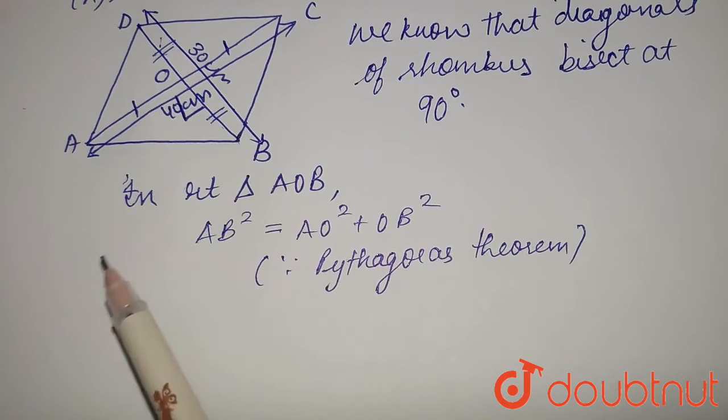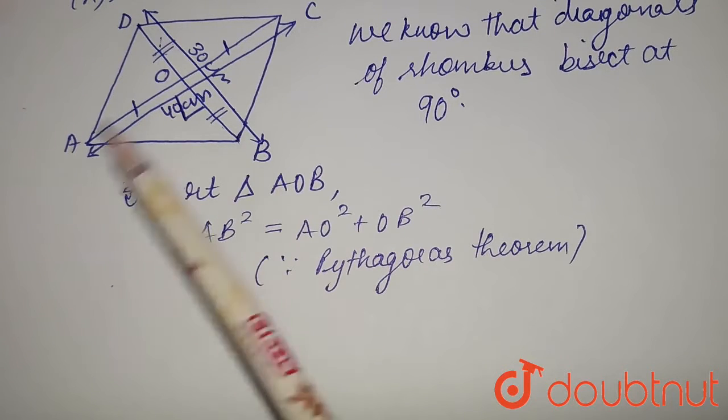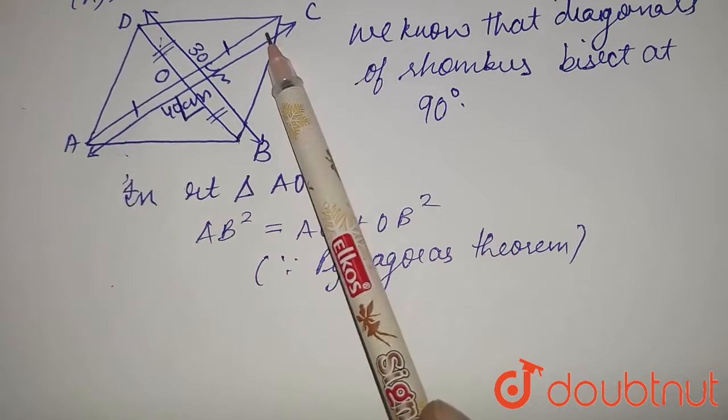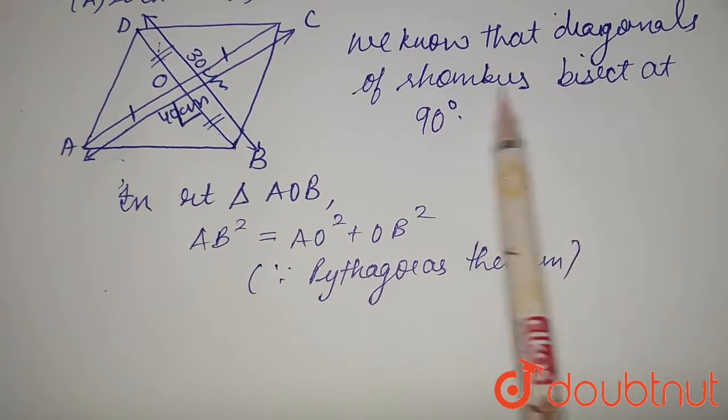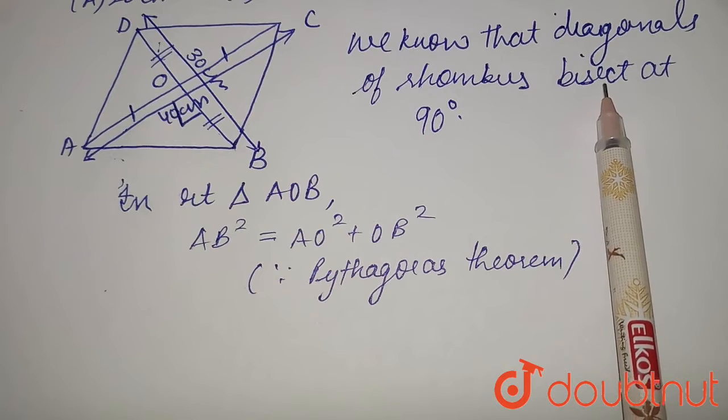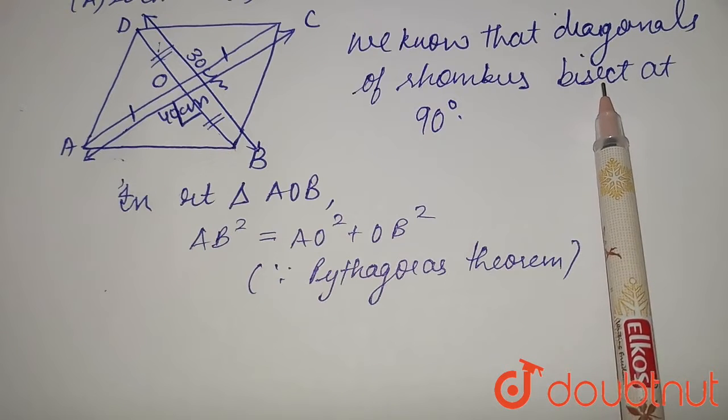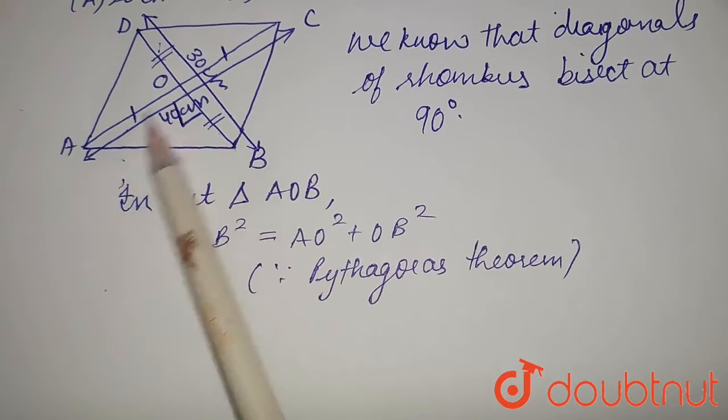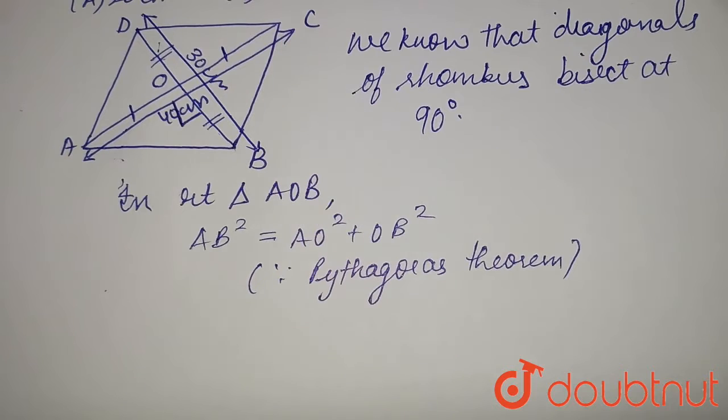And if we look carefully, what is AO? AO must be half of AC. Why? Because diagonals of rhombus bisect. Bisect means divide one another into two equal parts. So, AO must be half of AC.